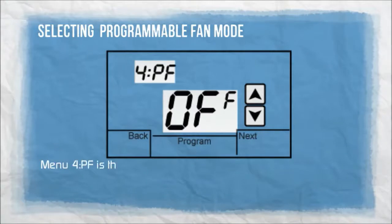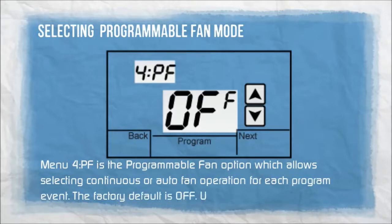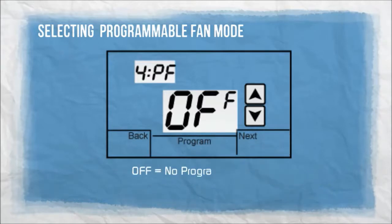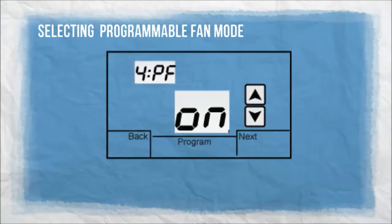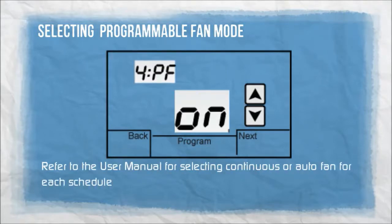Menu 4PF is the programmable fan option, which allows selecting continuous or auto-fan operation for each program event. The factory default is off. Use the up and down arrows to select a programmable fan option: off for no programmable fan, on for programmable fan operation. Refer to the user manual for selecting continuous or auto-fan for each scheduled event when the programmable fan option is on.